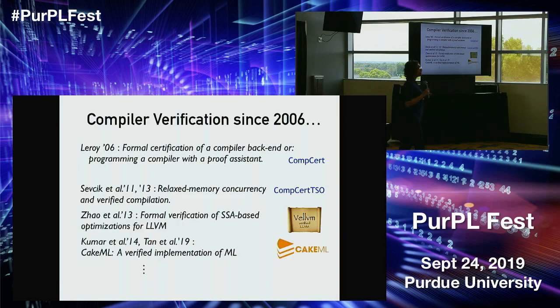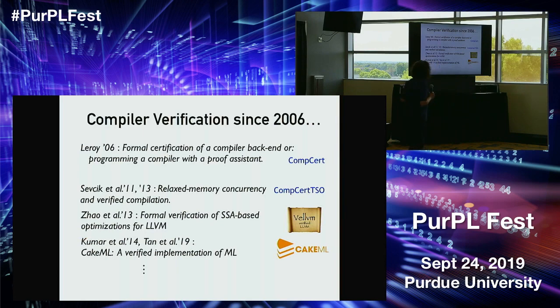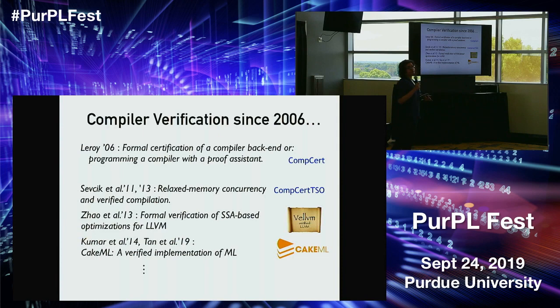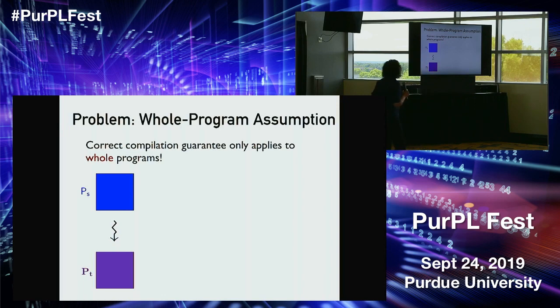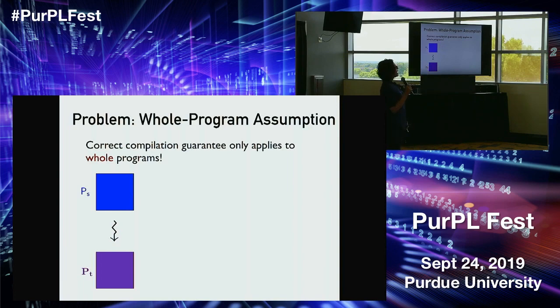What CompCert really did is it provided a proof architecture for others to follow and build upon, leading to a renaissance in compiler verification. This is just a tiny sample: people followed up by adding relaxed memory concurrency to CompCert, there was the verified LLVM (Vellvm) verifying the mem2reg pass and the LLVM back-end, and the very impressive CakeML compiler — a full-fledged ML compiler fully verified in HOL.